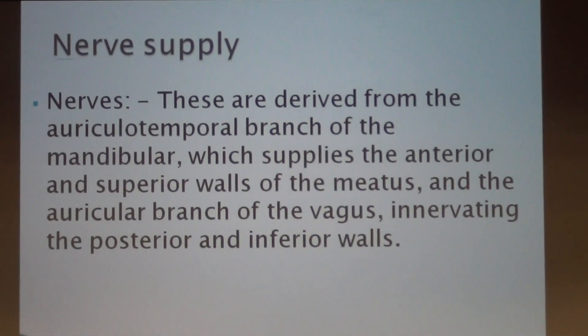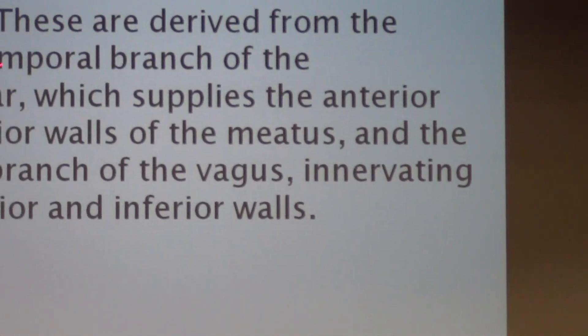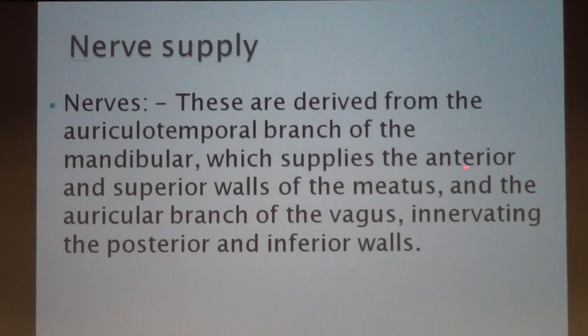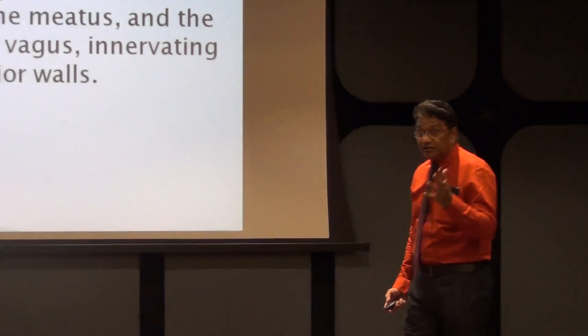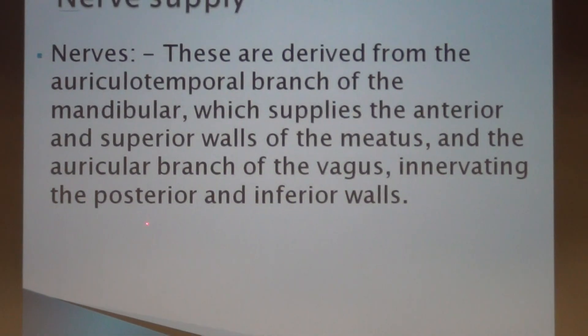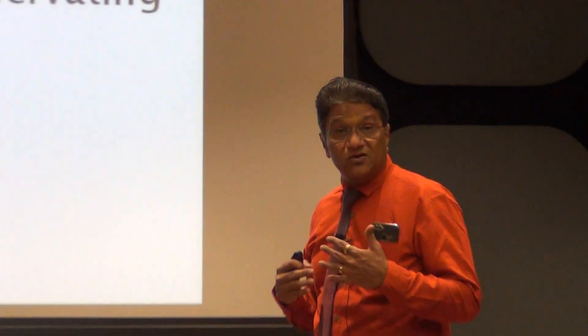Nerve supply is very interesting for the external acoustic meatus. It is derived from the auriculotemporal branch of the mandibular nerve, which supplies the anterior and superior wall of the meatus, and the auricular branch of the vagus nerve, which innervates the posterior and inferior wall. So when you stimulate this posterior and inferior part of the external acoustic meatus - for example with an earbud - you are bound to get a cough reflex.